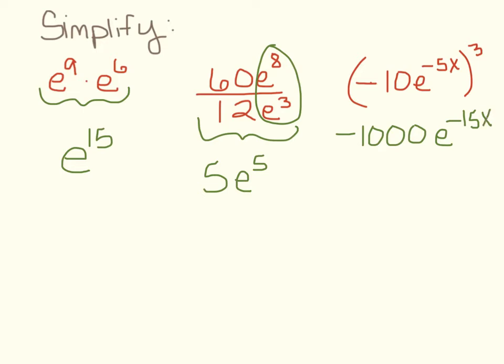That would give us negative 1,000 on top, and then take this to the denominator, E to the 15X in the denominator. So, same rules as we've done with exponents before, but we're going to practice more of this.